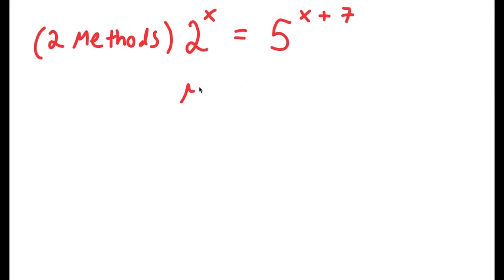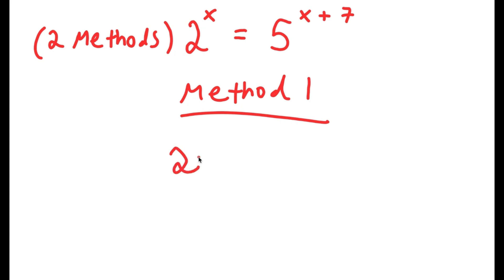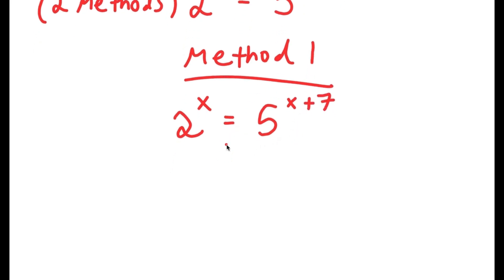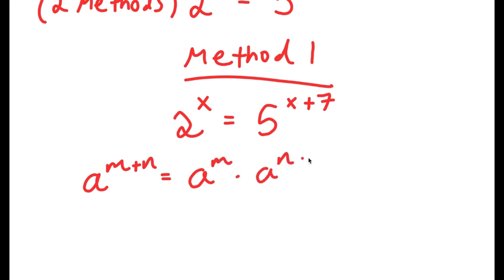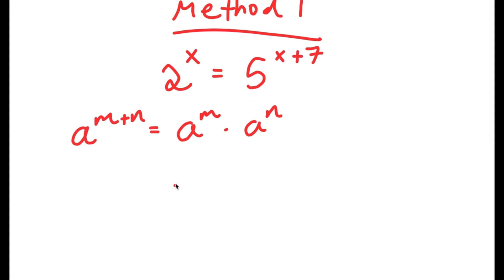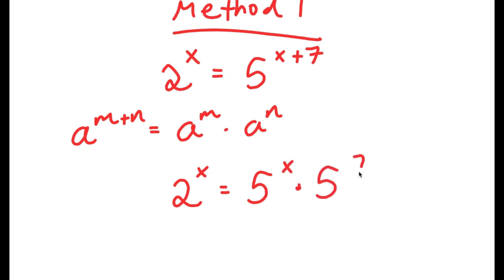For my first method, I'm going to write my problem right here: 2 to the power of x is equal to 5 to the power of x plus 7. And if I have something in the form a to the power of m plus n, this is equal to a to the power of m times a to the power of n. So 5 to the power of x plus 7, I can write that as 5 to the power of x times 5 to the power of 7.